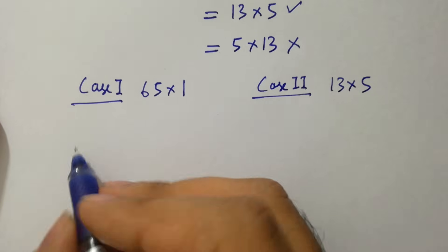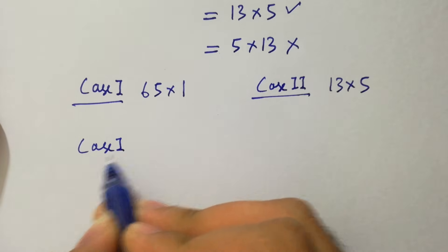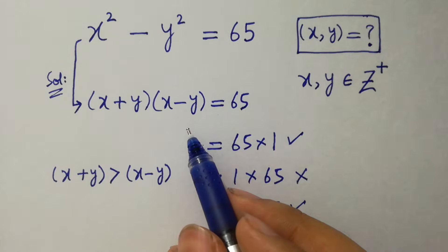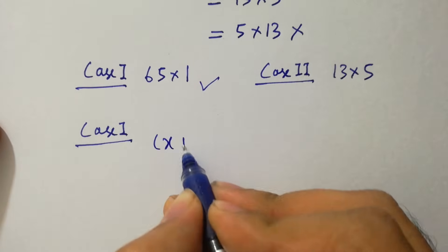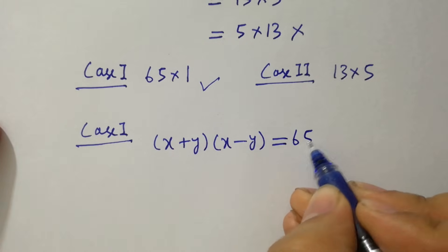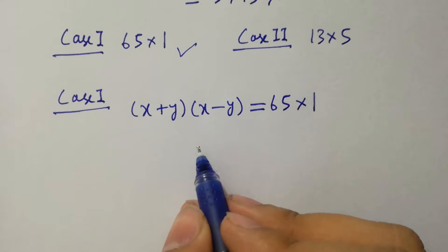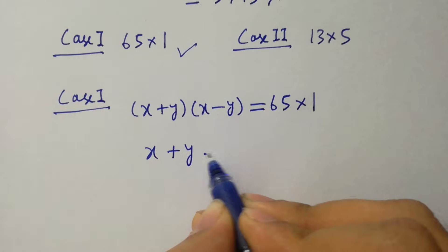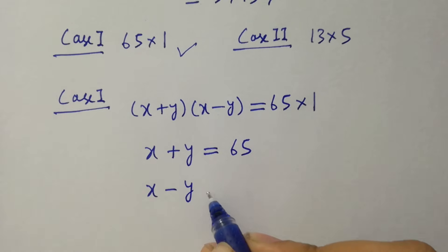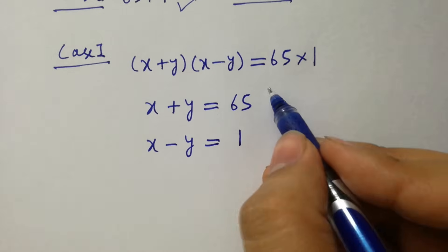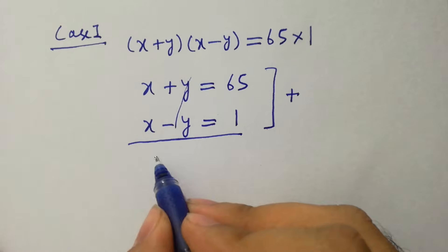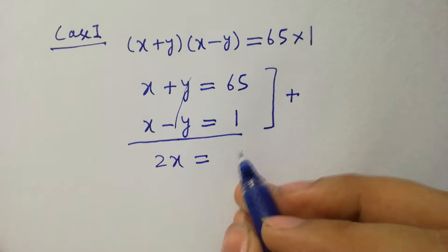First, take Case 1, which is 65 times 1. We have x plus y and x minus y equal to 65 times 1.